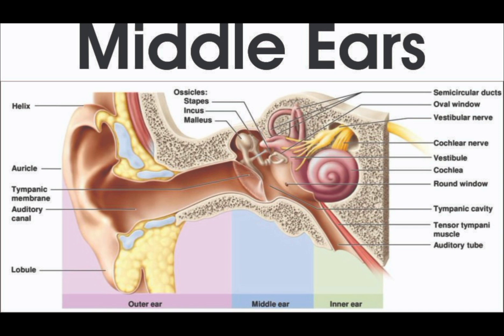The main function of the middle ear is to amplify and transmit sound vibrations from the eardrum to the inner ear. The ossicles act as a lever system to increase the force of the sound waves and focus them on the oval window. The eustachian tube helps to maintain proper air pressure in the middle ear and drain any fluid or debris that may accumulate. The oval window serves as a bridge between the middle ear and the inner ear, allowing the fluid waves to travel into the inner ear for further processing.